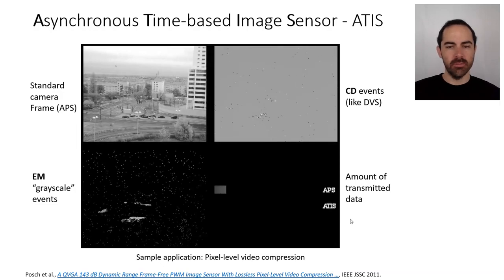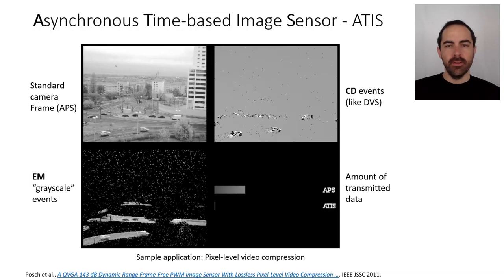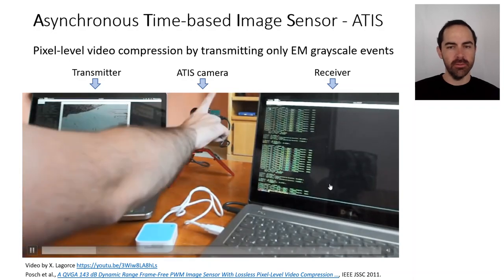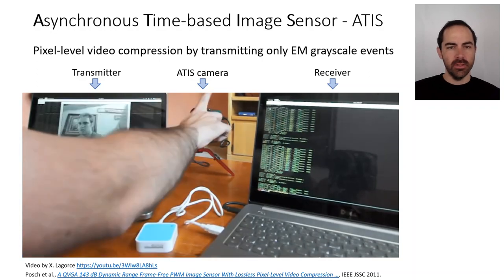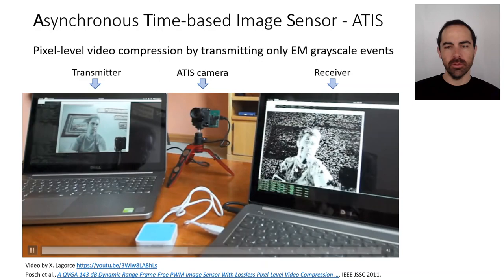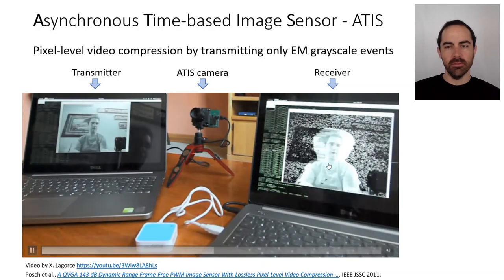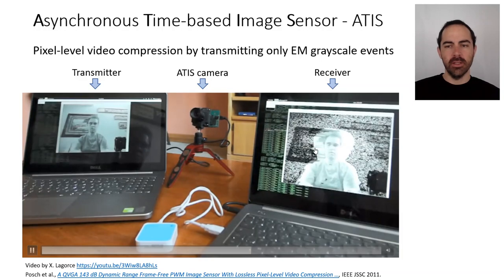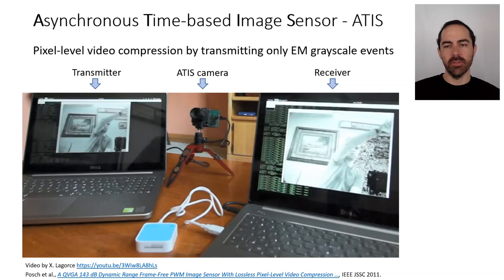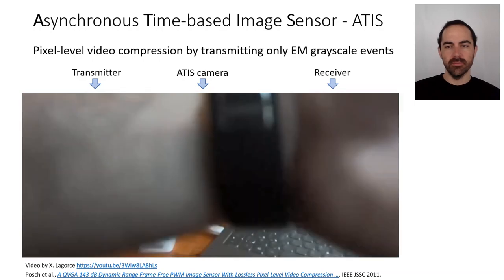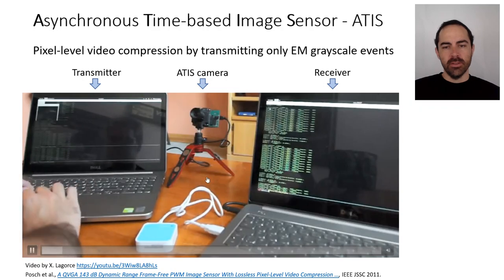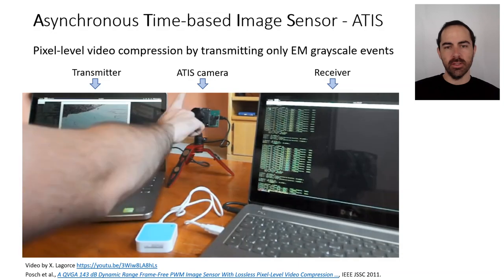This could be used, for example, for pixel-level video compression. In another example, we have an ATIS camera in the middle, a transmitter on the left, and a receiver on the right. We can see the grayscale events being transmitted to the right computer and displayed — taking the color of the last grayscale event arriving at each pixel.